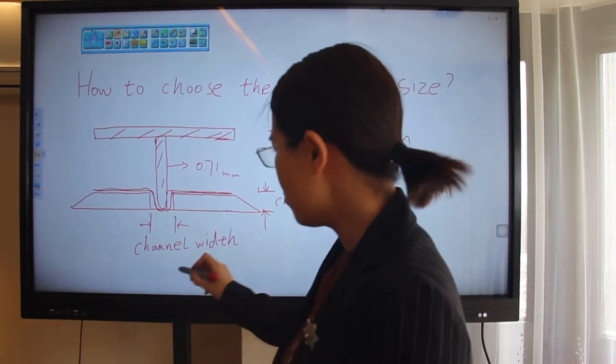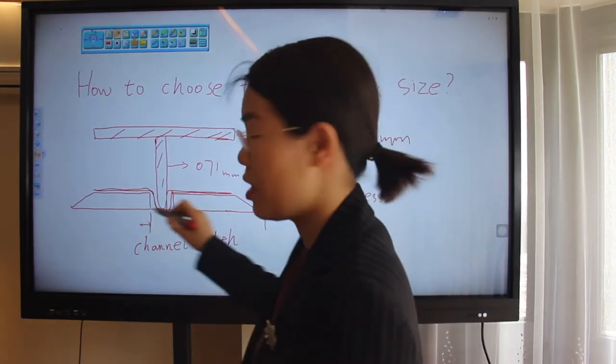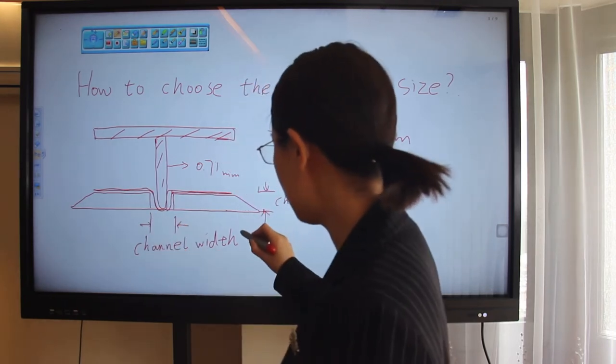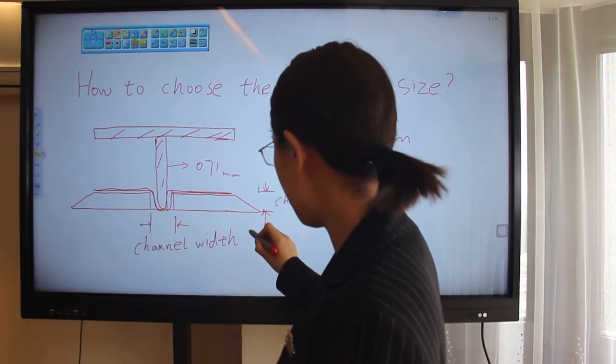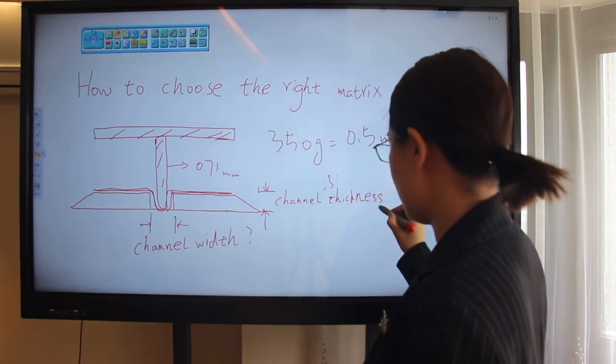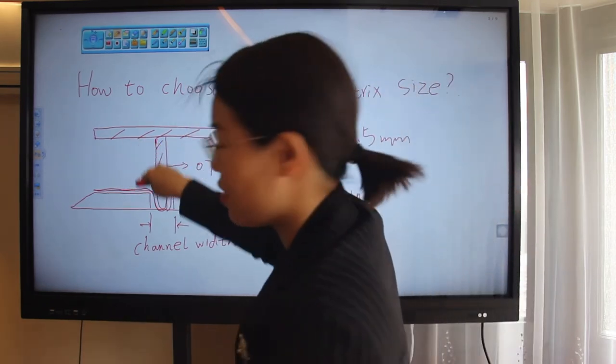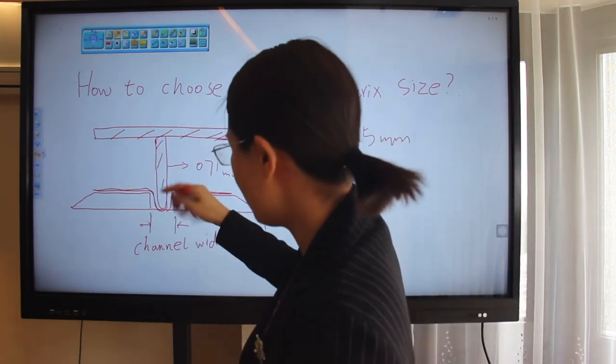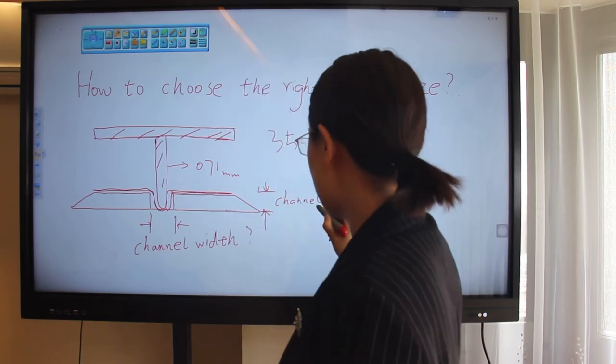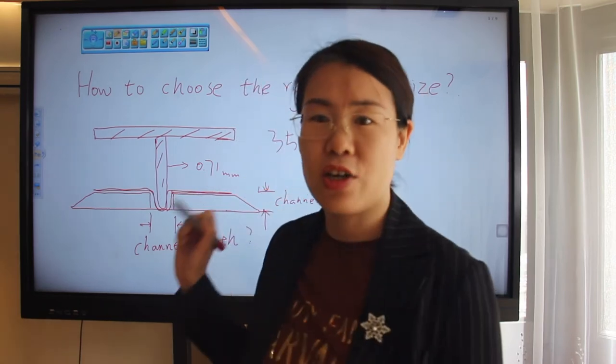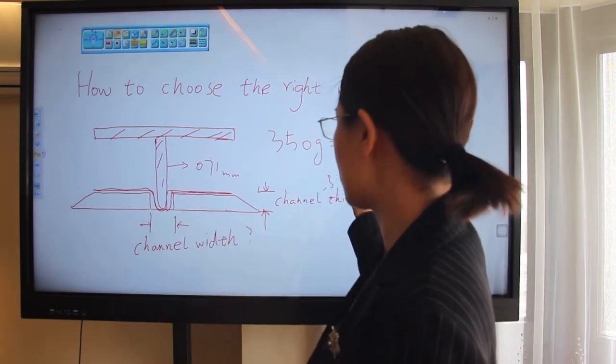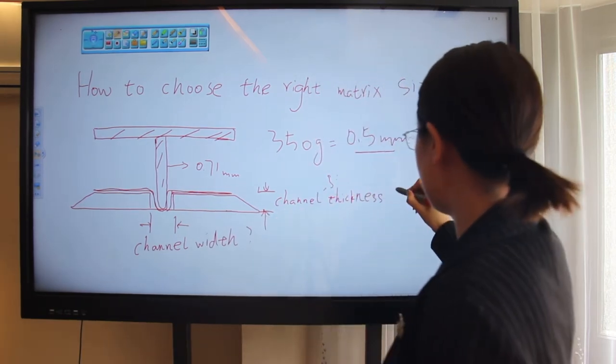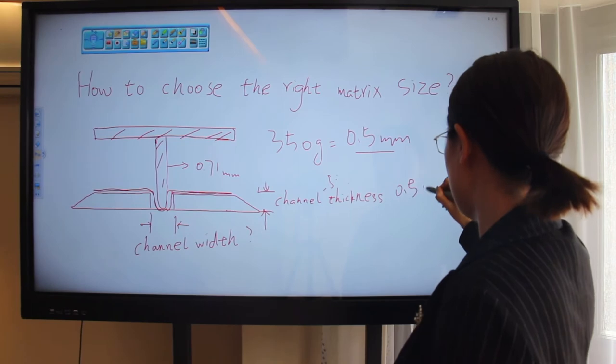So here is the crazy matrix diagram. This is the channel width, this is the channel thickness. So the paper is going to press down in this way. For channel thickness, that equals to the thickness of the board, that is 0.5 mm.